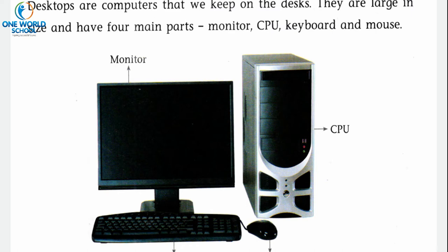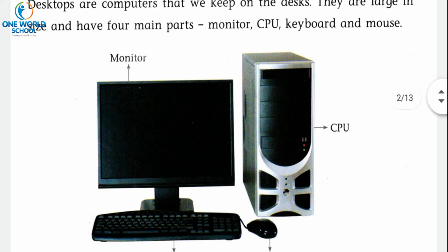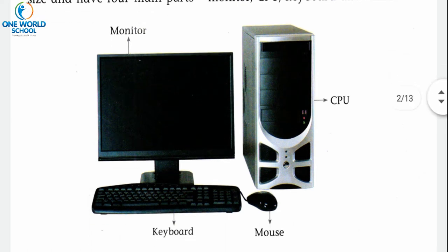You can see in this picture — जो TV screen जैसा दिखाए देता है उसको monitor बोलेंगे। Monitor के नीचे एक board है जिस पर बहुत सारी keys हैं, उसको keyboard कहते हैं। उसके बाजु में एक छोटा black round ball जैसा mouse है। और जो बड़ा box जैसा दिखाए दे रहा है, उसको CPU बोलेंगे। So the four main parts of a desktop: number one monitor, number two CPU, number three keyboard, and number four mouse.